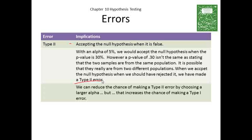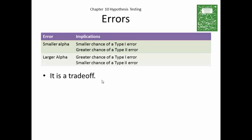How to reduce the chance of making a Type 2 error? By choosing a larger alpha. Ah-ha, now you have the problem. That creates a challenge with Type 1 errors. A larger alpha increases the chance of making a Type 1 error. Smaller alpha, smaller chance of Type 1 error, but greater chance of a Type 2 error. Larger alpha, greater chance of a Type 1 error, but smaller chance of a Type 2 error.